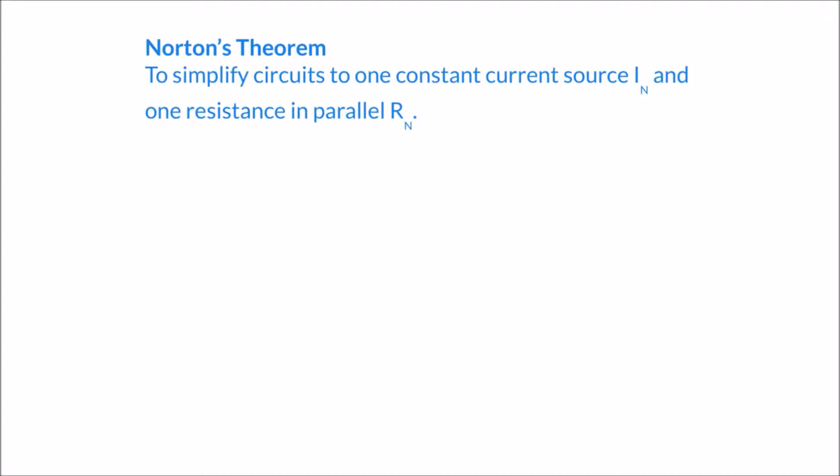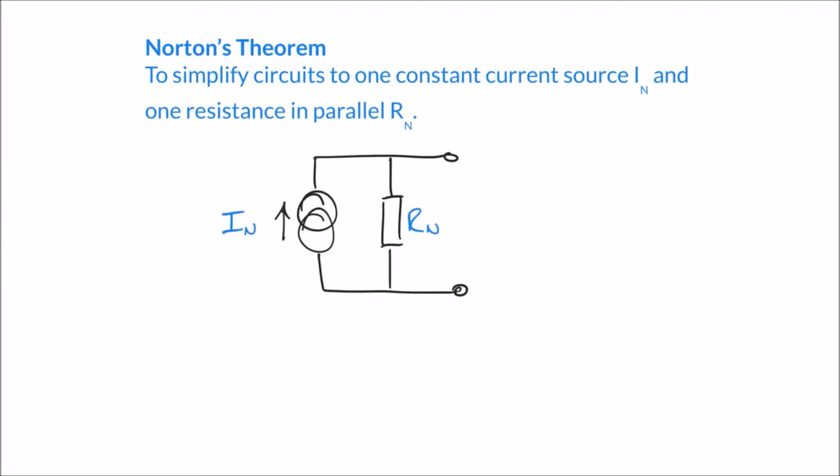Our Norton equivalent circuit looks something like this. We have a new circuit symbol on the left-hand side — the symbol for a constant current source — marked I_N, the Norton current. In parallel we have the Norton resistor R_N. This is slightly different to our Thevenin equivalent circuit because the resistance here is in parallel, whereas with the Thevenin equivalent circuit the resistor was in series. So the key differences: Norton's deals with currents rather than voltages, and the resistance is in parallel rather than in series.